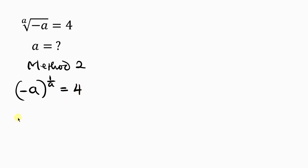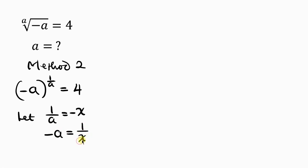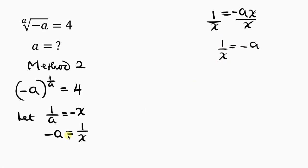We apply substitution by letting the exponent 1 over a equal to negative x. So wherever I see 1 over a, I put negative x. And if 1 over a equals negative x, then negative a equals 1 over x — obtained by cross multiplying to get 1 equals negative a times x, then dividing both sides by x.